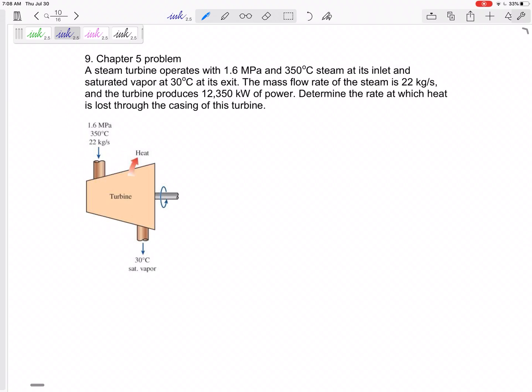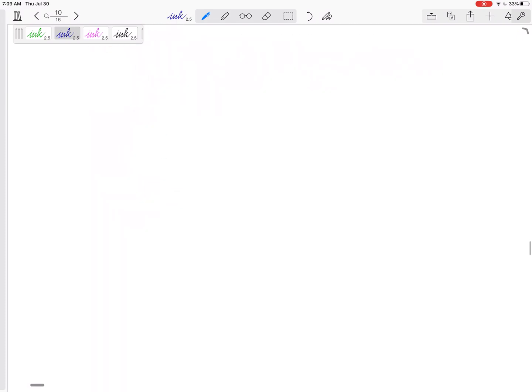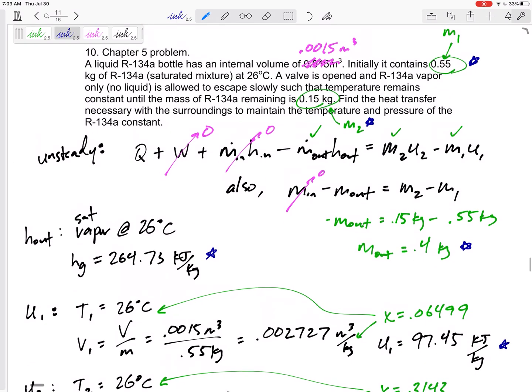Alright, so the Chapter 5 problem, it might be a steady flow device or it might be unsteady like the next one, okay?